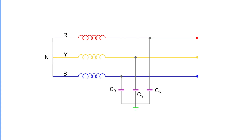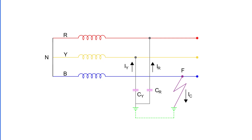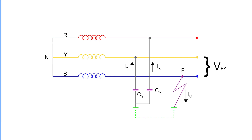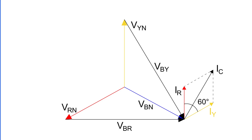Now let's discuss what happens when a single line-to-ground fault occurs. Suppose a fault takes place on line B at point F. When this fault occurs, the potential of phase B becomes equal to ground potential, short-circuiting the line-to-ground capacitance Cb — so no capacitive current flows through Cb anymore. Currents Ir and Iy still flow through lines R and Y. The voltage driving Ir is Vbr (the voltage between phase B and R), and the voltage driving Iy is Vby (between phase B and Y). These are line voltages, and the paths remain capacitive, so Ir leads Vbr by 90° and Iy leads Vby by 90°, as seen in the phasor diagram for the fault condition.